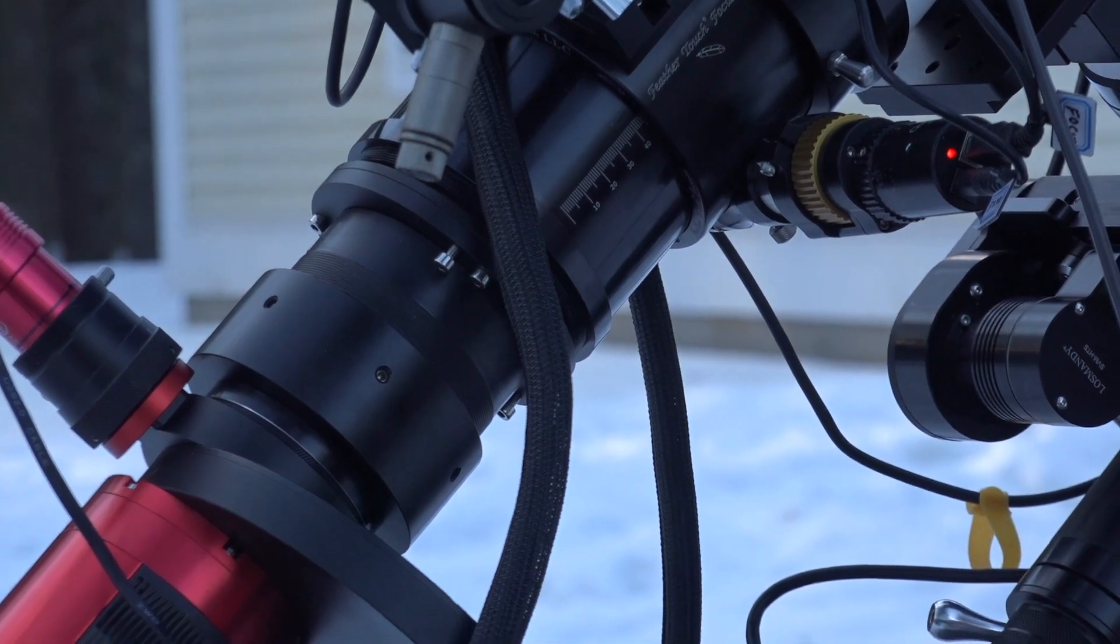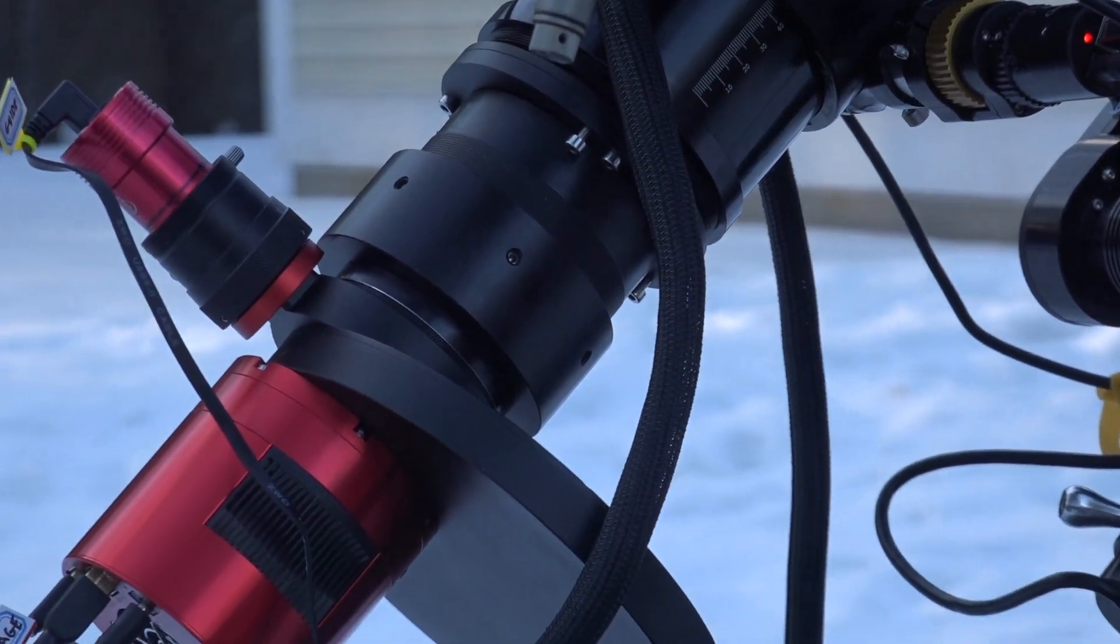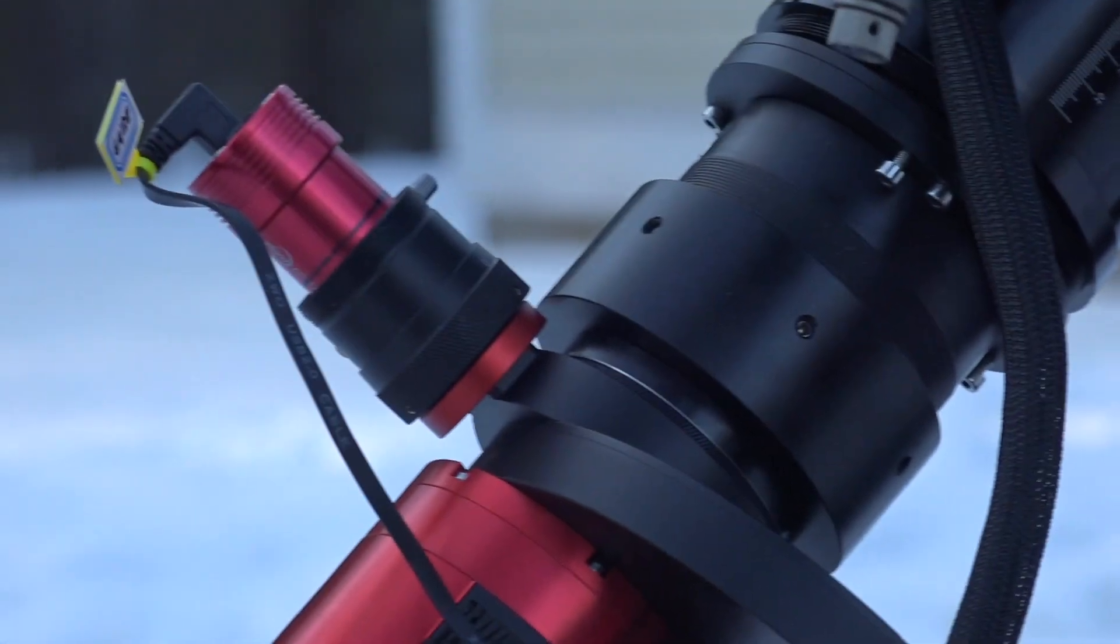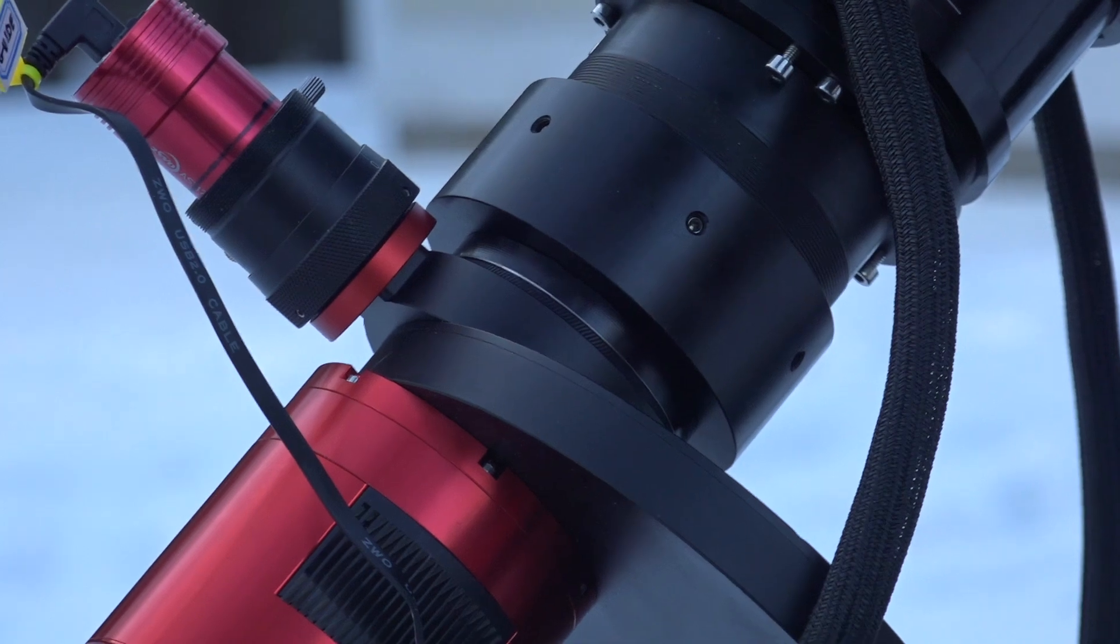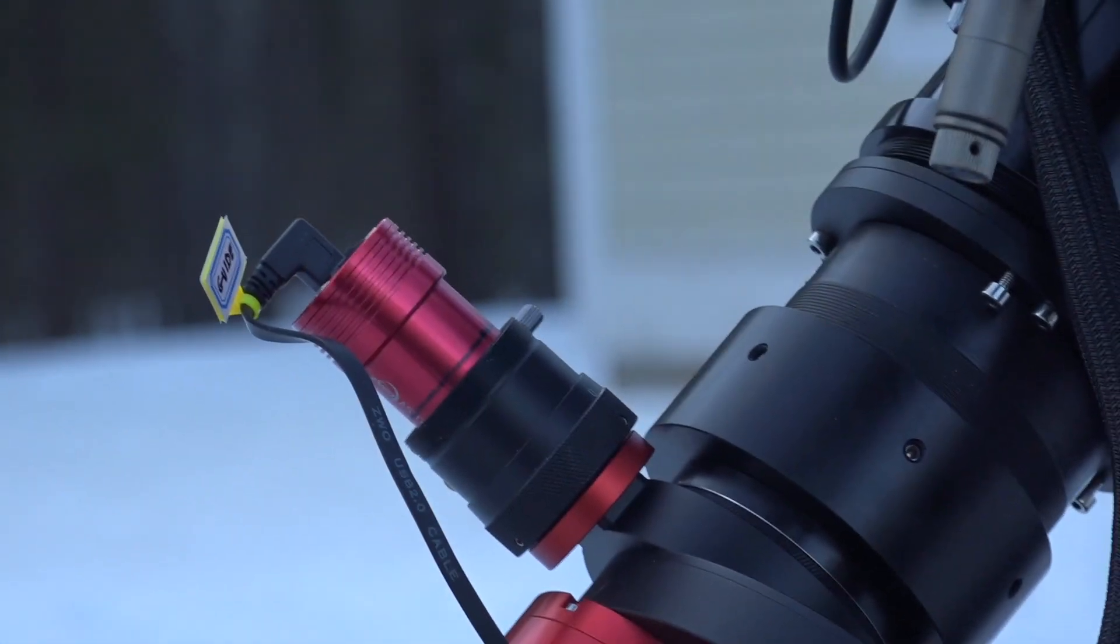Immediately behind the focal reducer is an off-axis guider, which is a prism. It takes some of the light and bounces it up into this little red camera, which is an ASI 174 MM mini guide camera.